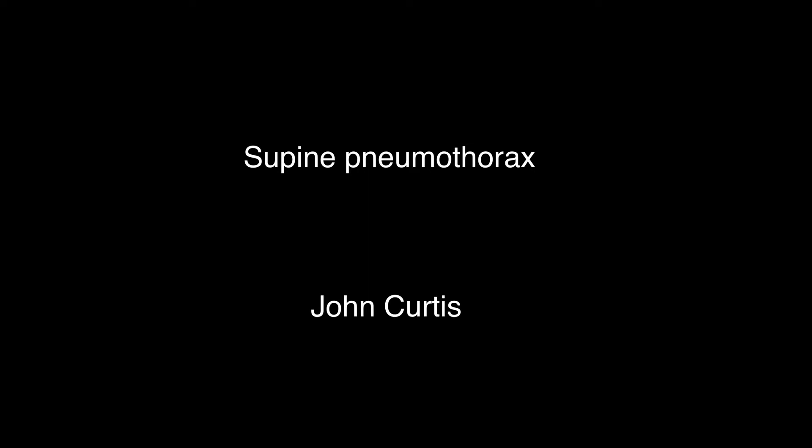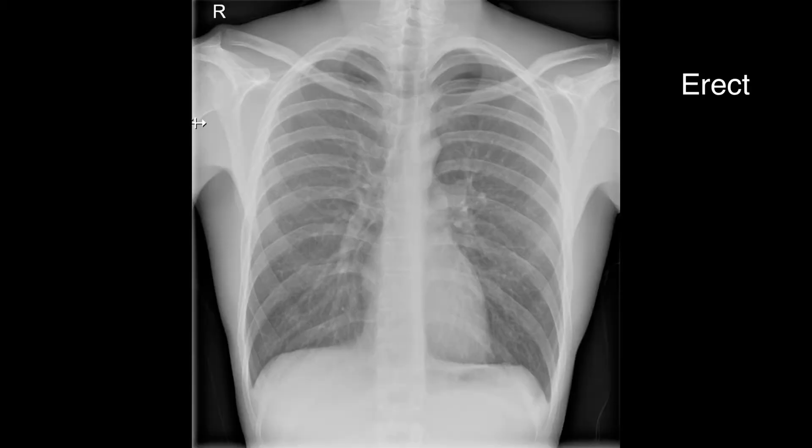In this video, I'll be discussing the radiological appearances of a pneumothorax in a supine patient. In the erect patient, because air rises, the pneumothorax is seen in the apex.